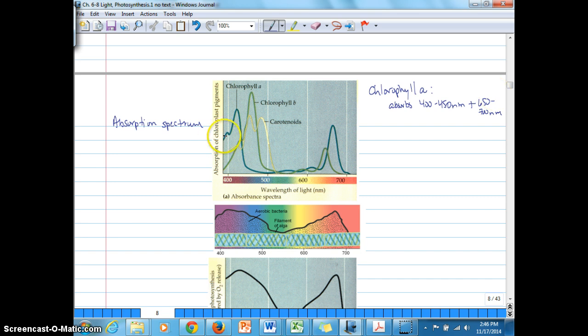Plus 650 to 700 nanometers. Okay, and so we can see that by the double peak here, peak in the 400 to 450 range coming across here, and then climbing back up just below 650, all the way through 700.